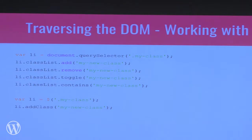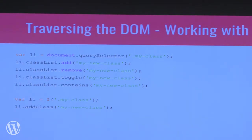Working with classes: in jQuery you'd find an element and call .addClass() to add a new CSS class. This is commonly used for animations — by adding and removing a class you can trigger CSS transitions for fading effects. In vanilla JavaScript, the equivalent is element.classList.add(). You also have classList.remove() for removing a class, classList.toggle(), and classList.contains() to check if an element has a given class.